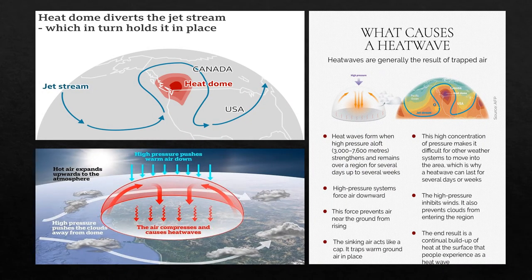Before discussing the heat wave, we have to talk about the jet stream, which is a high-force wind taking place in the northern hemisphere of the Earth. This jet stream has been causing the heat dome effect. The jet stream has high pressure winds traveling and creating a loop, where the high pressure wind acts upon the ground of the countries, pushing downward.